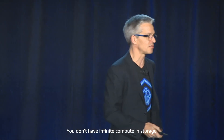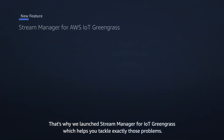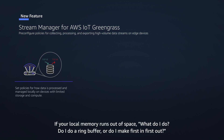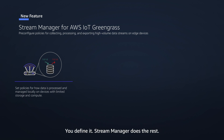You don't have infinite compute and storage, so what do you do? That's why we launched a stream manager for IoT Greengrass, which helps you tackle exactly those problems. You can set policies on what to do with your streams on an individual stream basis if your local memory runs out of space. Do you use a ring buffer? Do you do first in, first out? You define that — stream manager does the rest.